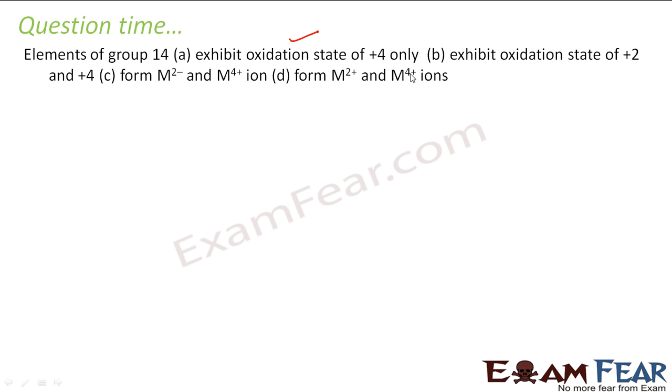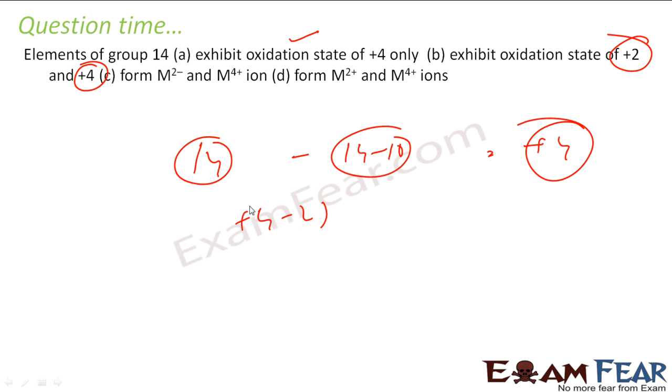The elements of group 14 exhibit plus 4 oxidation state only, plus 2 and plus 4, or M2- and M4+. What is this? If you see, the answer is pretty simple: plus 2 and plus 4. We have talked about this. Because group 14, the maximum has to be 14 minus 10, that is plus 4. But due to inert pair effect, this is plus 4 minus 2, that is plus 2. So it exhibits plus 2 and plus 4 oxidation states. Group 14, the group number is 14, so maximum is 14 minus 10, that is plus 4 oxidation state. But because of inert pair effect, it also exhibits plus 4 minus 2, that is plus 2 oxidation state.